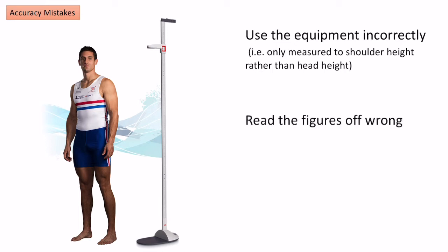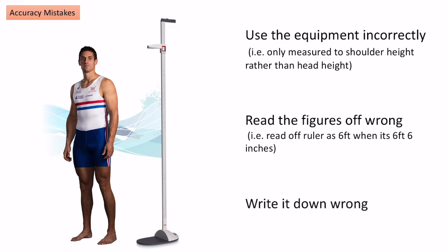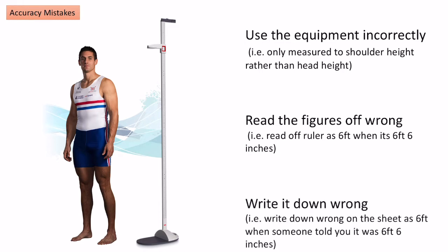Similarly, I might misread the figures. On the ruler I read it as six foot because I've got bad eyesight, when it actually says six foot six. Therefore the data I've recorded isn't accurate because it doesn't reflect reality. Similarly, I might write it down wrong — someone tells me it's six foot six, but I hear them wrong and write it down as six foot, so the data on my log sheet is inaccurate.